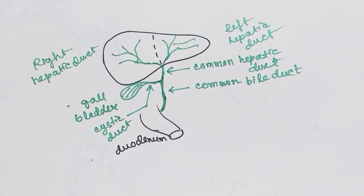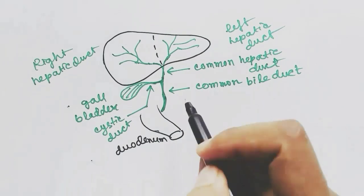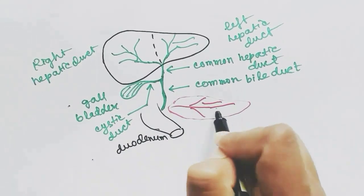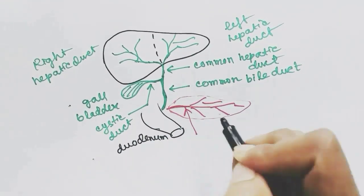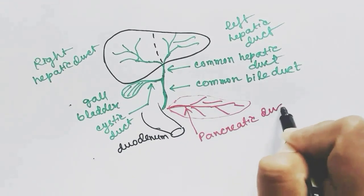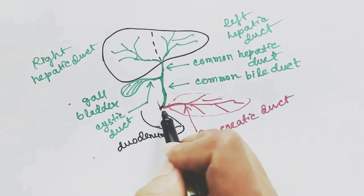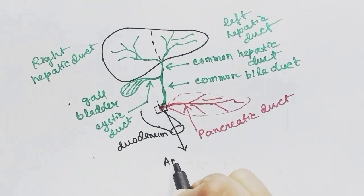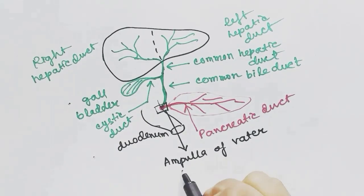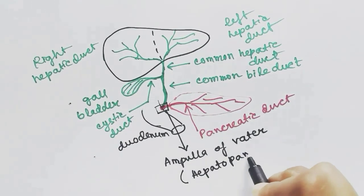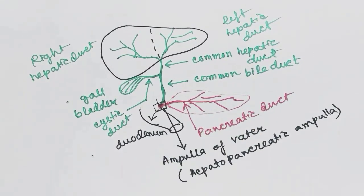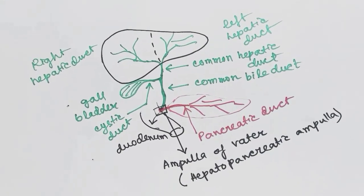The pancreas is also present here, and it has the pancreatic duct. The pancreatic duct meets with the common bile duct, and the junction of the bile duct and pancreatic duct is called the ampulla of Vater. Both the secretion of bile and pancreas are released into the duodenum.